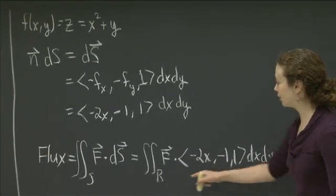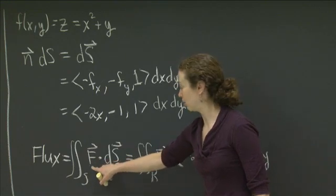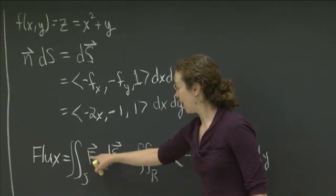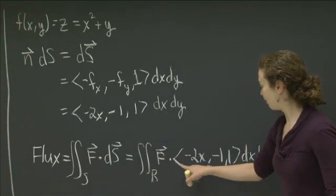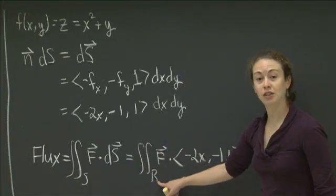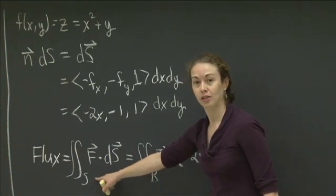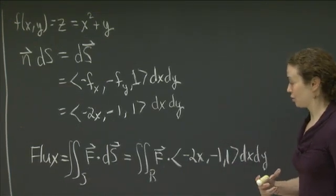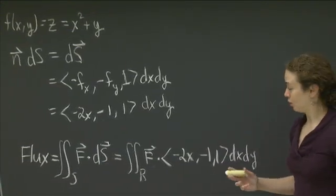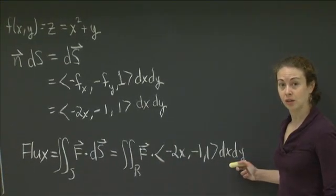So now we're integrating. We've gone from looking at a surface integral. Now we were integrating F dot ds on the surface to now taking F dotted with this vector on the region in the xy plane over which we can define S. So the region we're interested in, remember, is the unit square. So we had the unit square, which is x goes from 0 to 1, and y goes from 0 to 1.